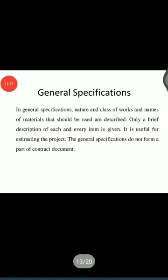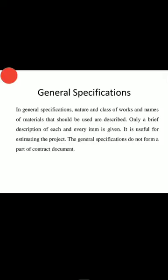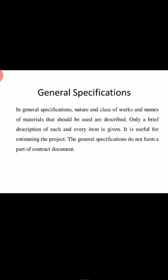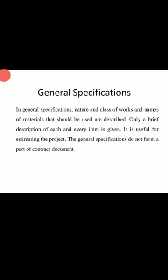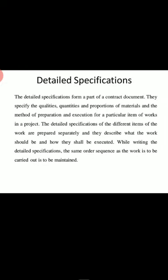In general specification, the nature and class of work and the name of the particular material that should be used are described. Only a brief description of each and every item is given. It is useful for estimating the project. General specification does not form a part of the contract document. For example: 'cement concrete M10, 1 is to 3 is to 6 to be laid' — that kind of sentence as shown in the measurement sheet is what we call general specification.